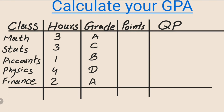For most colleges, for an A grade the points are 4, for a B grade the points are 3, for a C grade the points are 2, for a D grade the points are 1, and for an A grade again the points are 4.